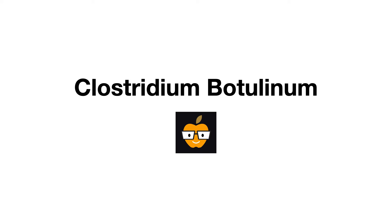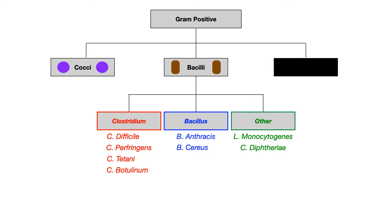Welcome back to the microbiology series. In this video, we will be concluding the conversation about the different types of Clostridium by talking about Clostridium botulinum. We've already concluded talking about gram-positive cocci, and more recently I've been going through the gram-positive bacilli. The first major subcategory of gram-positive bacilli is Clostridium. I've already gone through C. diff, C. perfringens, and C. tetani, and now I'm wrapping up by talking about Clostridium botulinum.